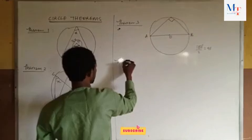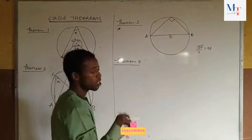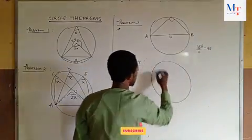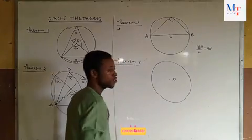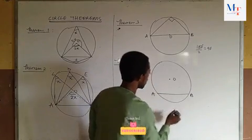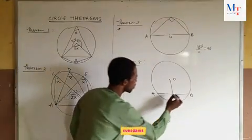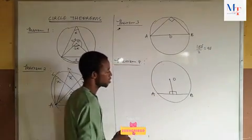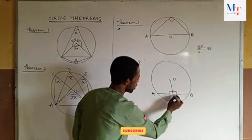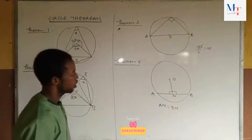Theorem 4 states that a line drawn from the center of a circle to a chord is perpendicular to the chord. We have a circle with center O and a chord AB. A line drawn from the center to the chord meets it at right angles and also bisects the chord — dividing it into two equal parts. If this point is N, then AN equals BN.